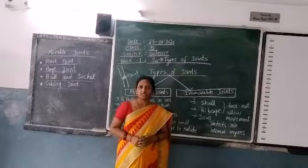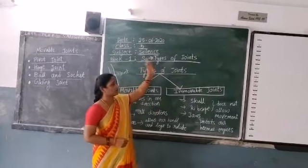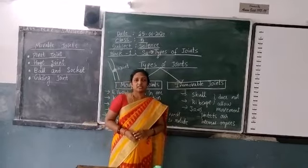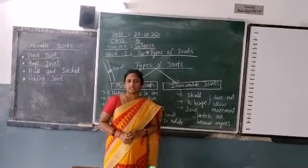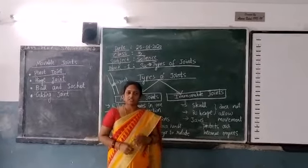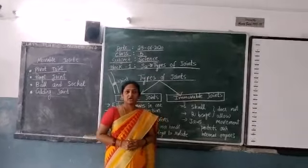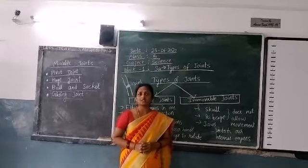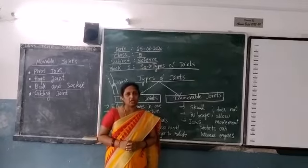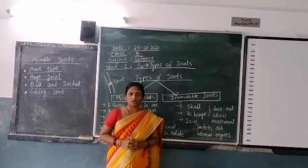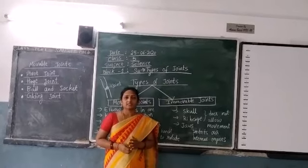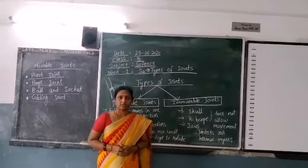Today we are going to learn about types of joints. The second sub-topic is types of joints. So before going to the topic, first let us know what is a joint. A joint is a place where two bones meet and are connected at one place, which allows movement in our body. There are different types of joints in our body.